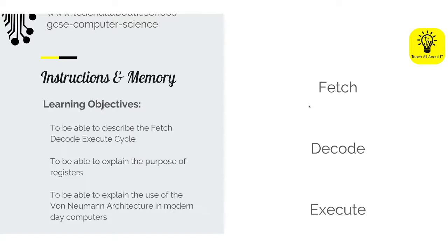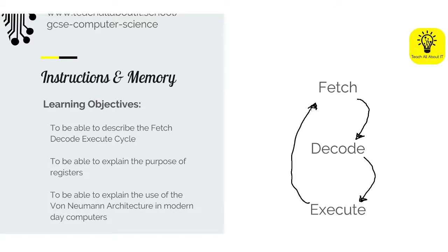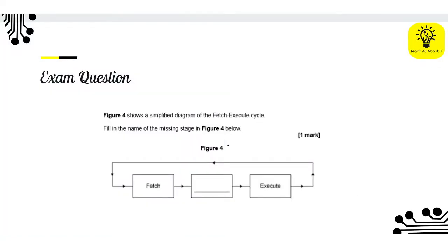We are fetching an instruction that goes into a register. The data also goes into a register, and also the address to go and find that data from. The idea is that we fetch it, it then gets decoded, which means we can then run the instruction — that's executing. Once it's fetched and decoded, once it's executed, we go back to the beginning and create a cycle. You'll sometimes see this written as the FDE cycle, or the fetch-execute cycle.